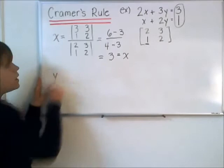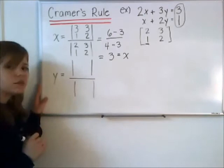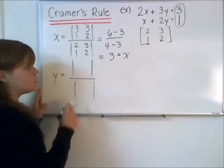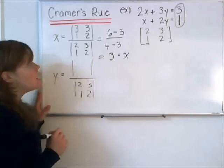Moving on to figure out the solution for the y value, our second variable, we'll set up a similar fraction where we have a determinant over a determinant. Again, in the denominator, we leave it to just be the determinant of the original coefficient matrix: 2, 3, 1, 2.